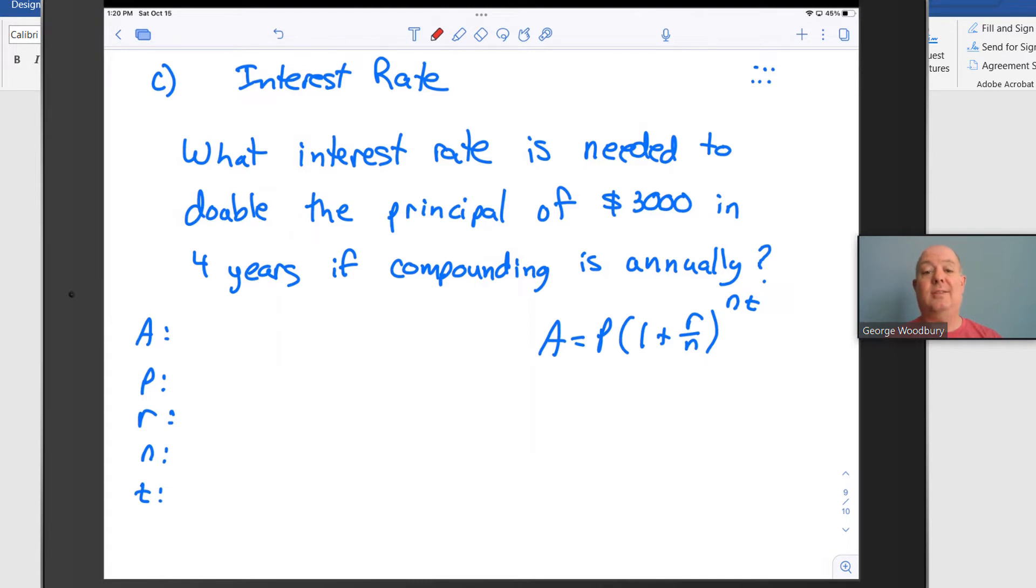I can tell right away, the first three to five words tells me that I'm going to be looking for r. What interest rate is needed? I see the principal of $3,000, so that's P. In four years, that's t. The compounding is annually, that's once per year.